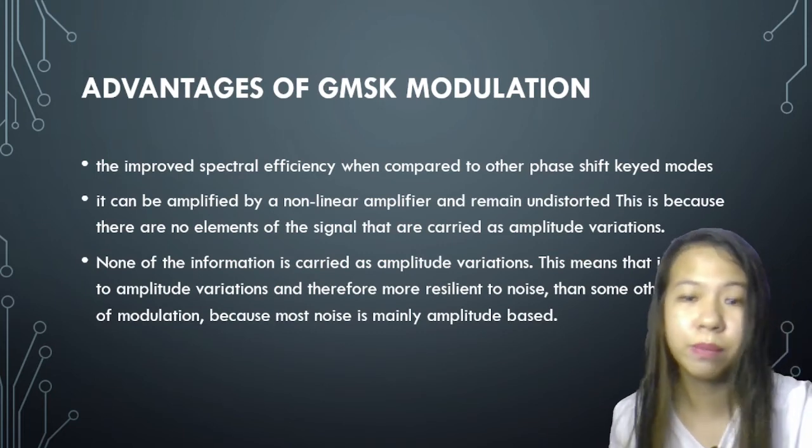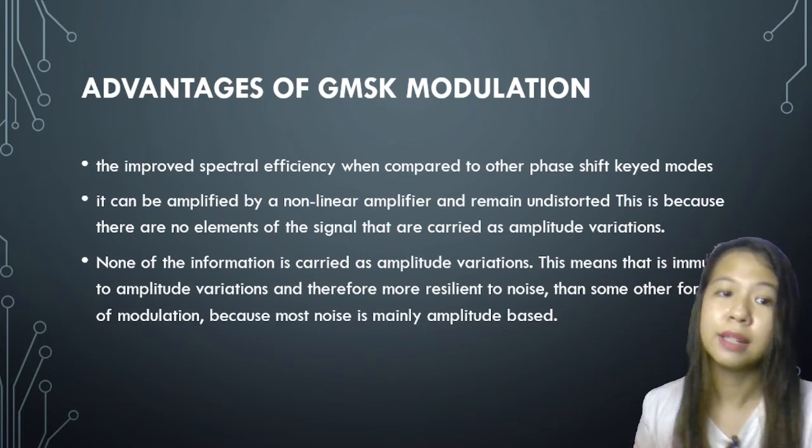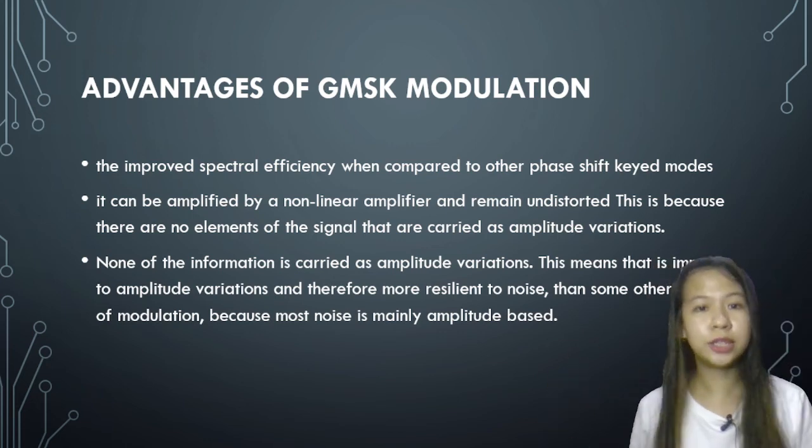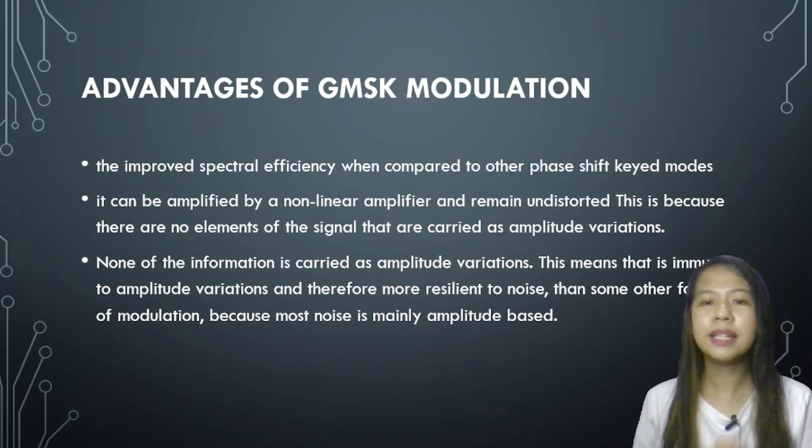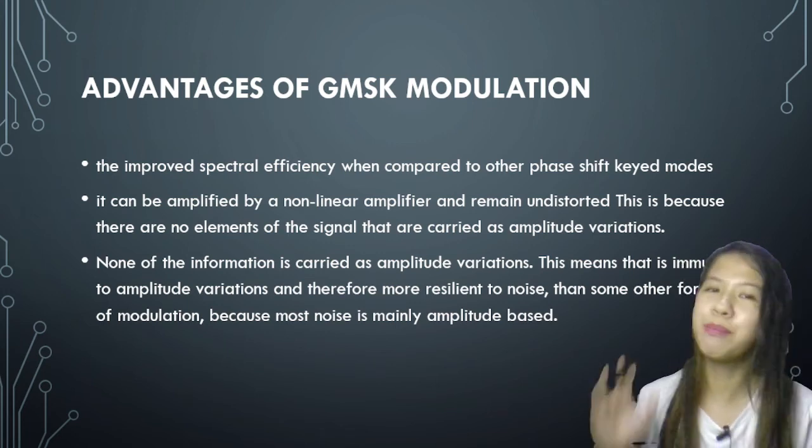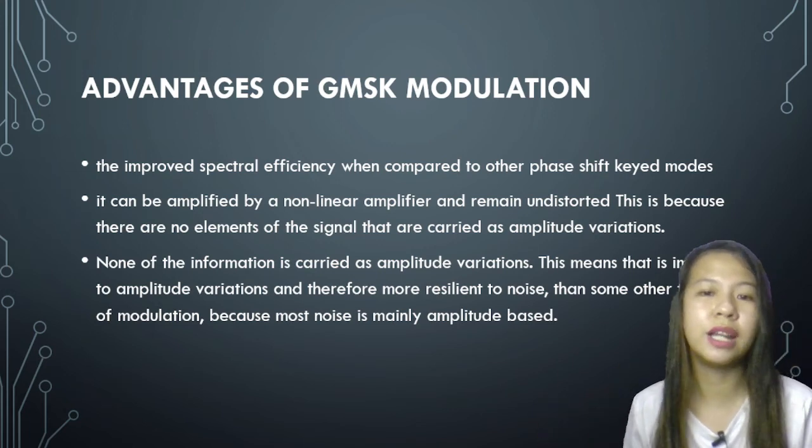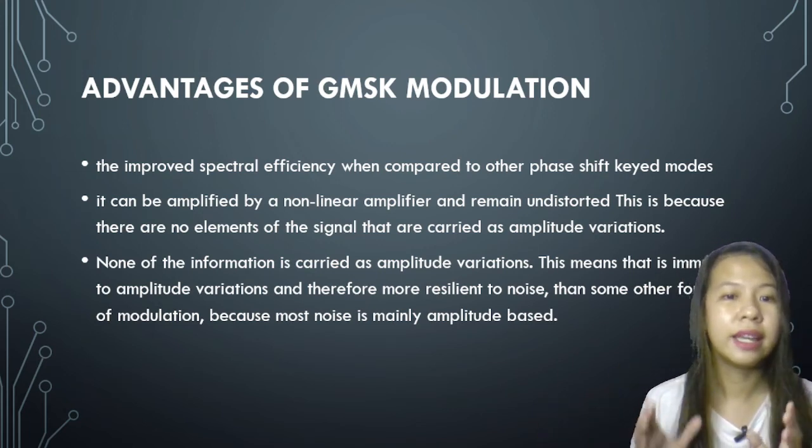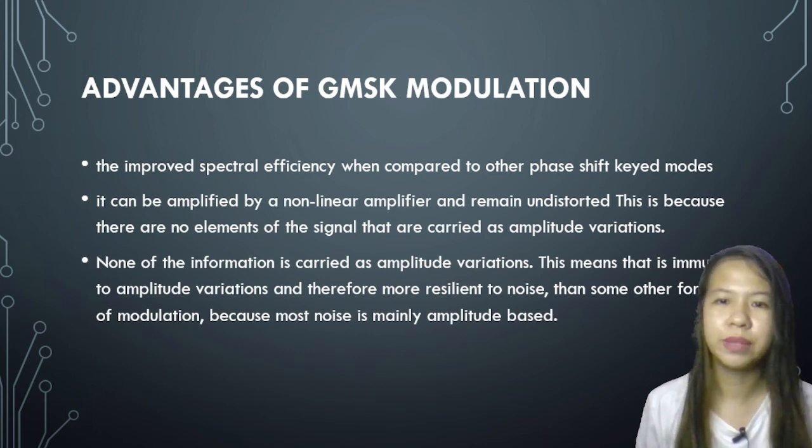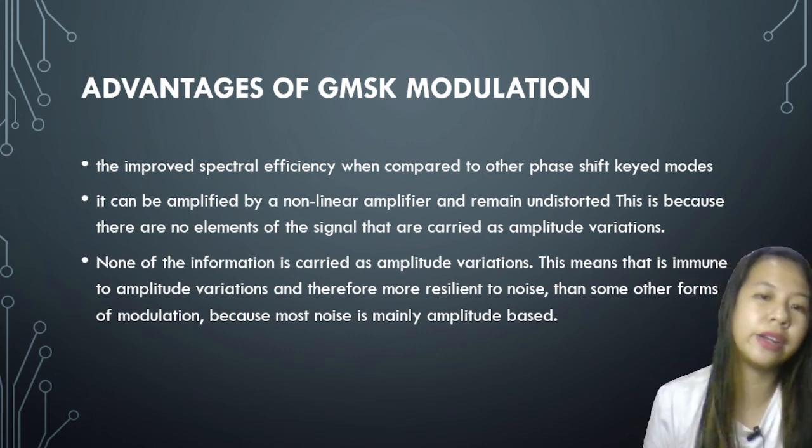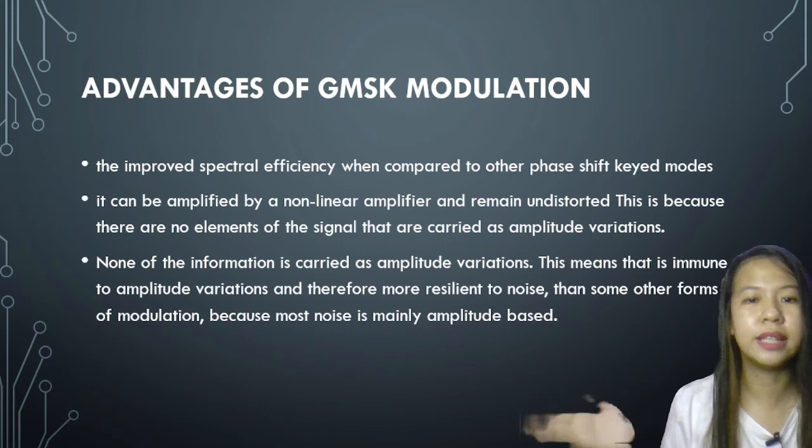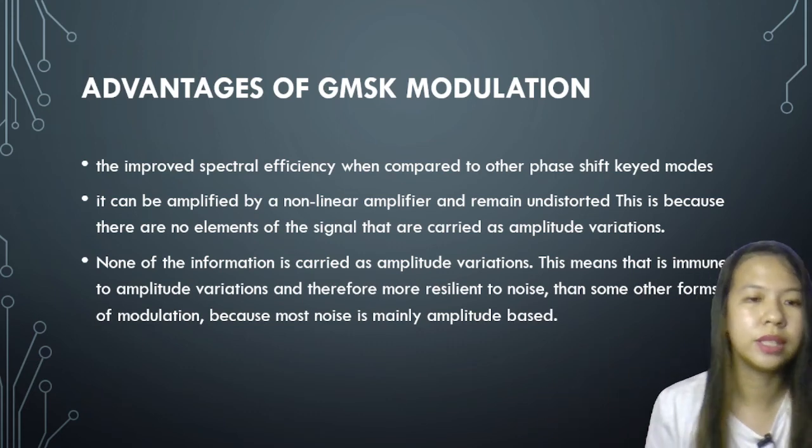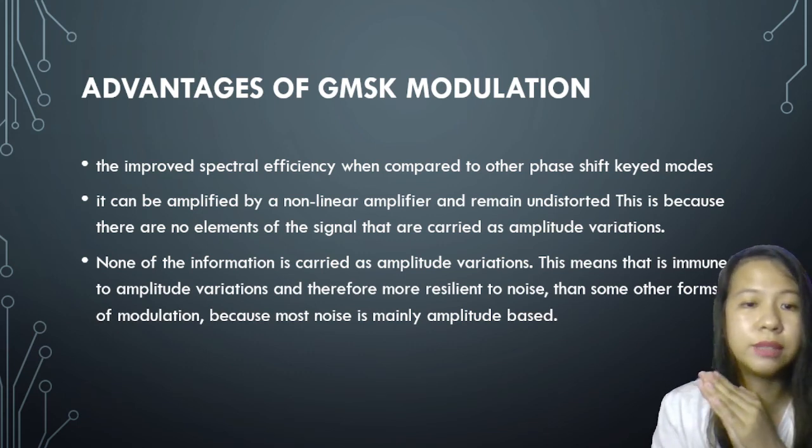So the advantages of GMSK modulation. Here are the advantages: It improves the spectral efficiency when compared to other phase shift keying methods or modes. It can be amplified by a non-linear amplifier and remain undistorted. This is because there are no elements of the signal that are carried as amplitude variation. And the last one, none of the information is carried as amplitude variation. This means that they are immune to amplitude variation and therefore more resilient to noise than some of the other forms of modulation, because most of the noise is mainly amplitude based.